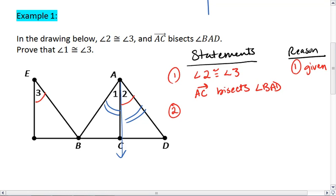Alright, statement 2. Since AC bisects angle BAD, this is what let us make those blue arc marks. We know then that angle 1 is congruent to angle 2. And this is by the definition of an angle bisector.